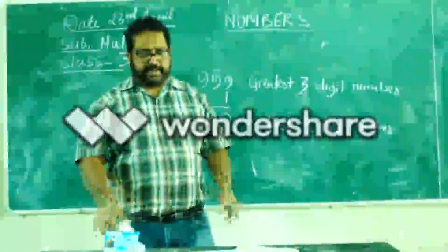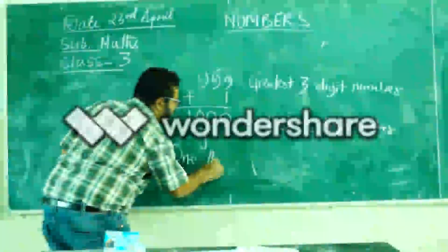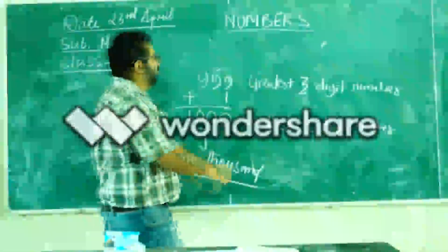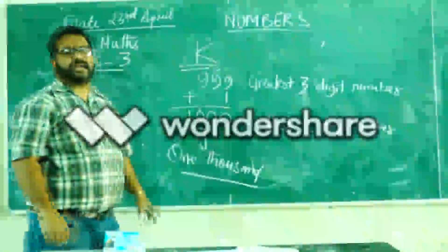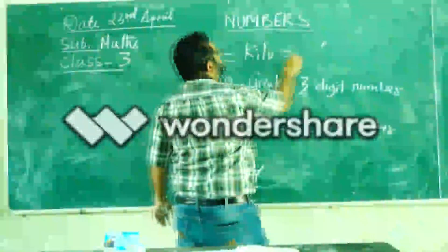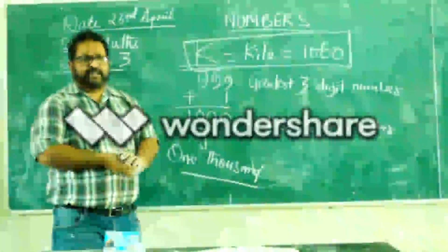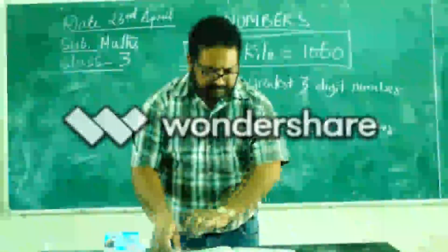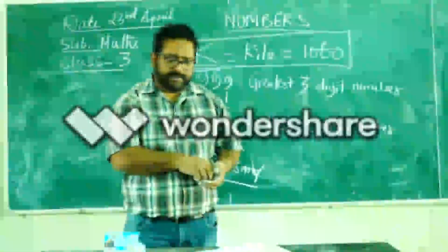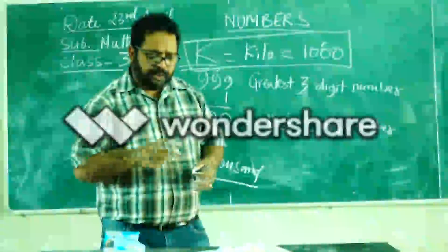And this number is read as 1,000. We can also write 1,000 as K — the big English alphabet K. K means kilo, and kilo is 1,000. We will discuss this more later. Now, similarly, the highest two-digit number and three-digit numbers are obtained by subtracting 1 from the smallest three-digit number and four-digit numbers respectively.